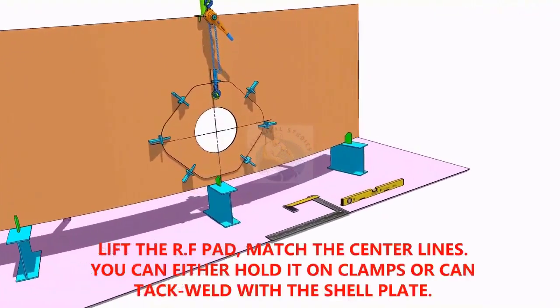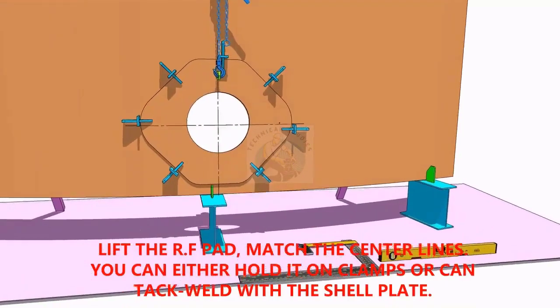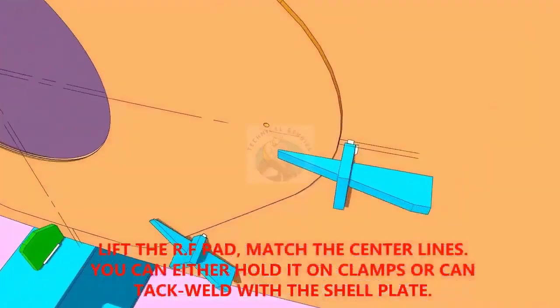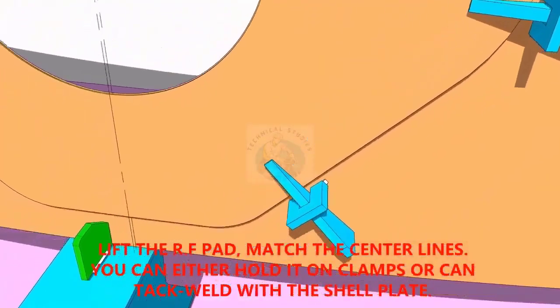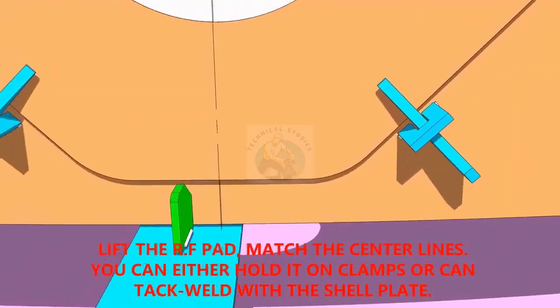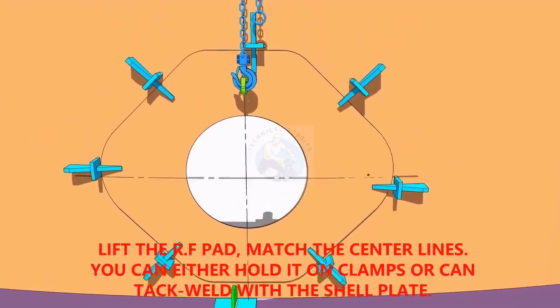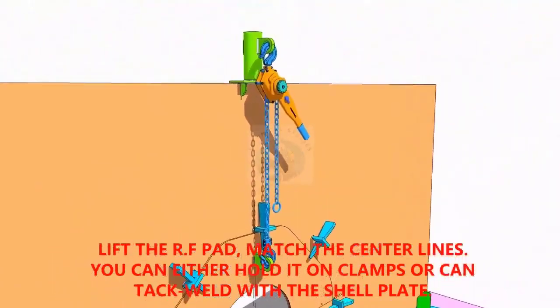TAC weld the reinforcement pad on the shell plate. You can either TAC weld directly on the shell or fix it with clamps as shown. Make sure the center lines on the shell plate and the pad are matching.